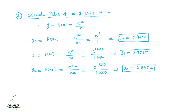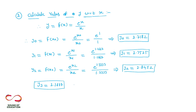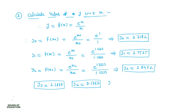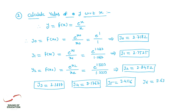Similarly, calculate all other values of y. y3 is equal to 2.9877, y4 is equal to 3.1767, y5 is equal to 3.4116, and lastly y6 is equal to 3.6945. This y6 is also yn. All values of y have now been calculated.